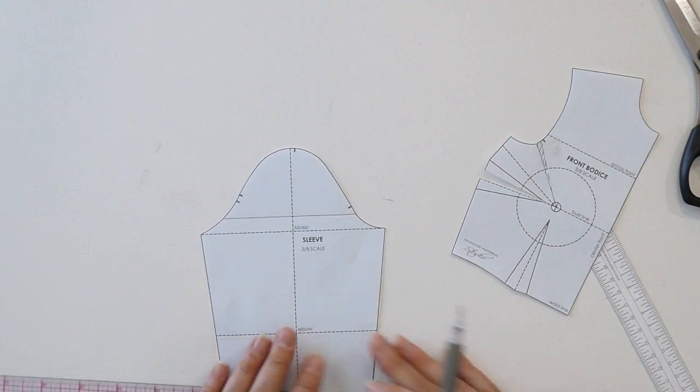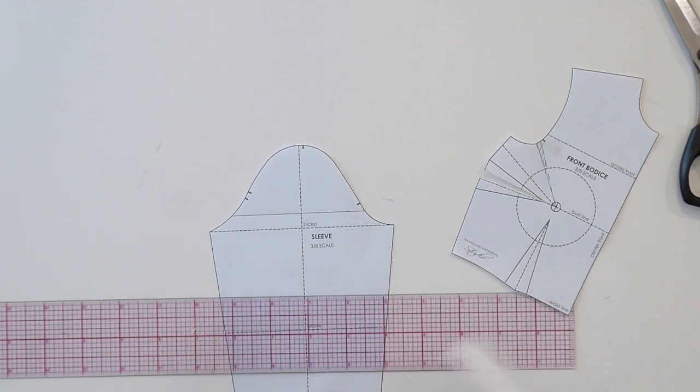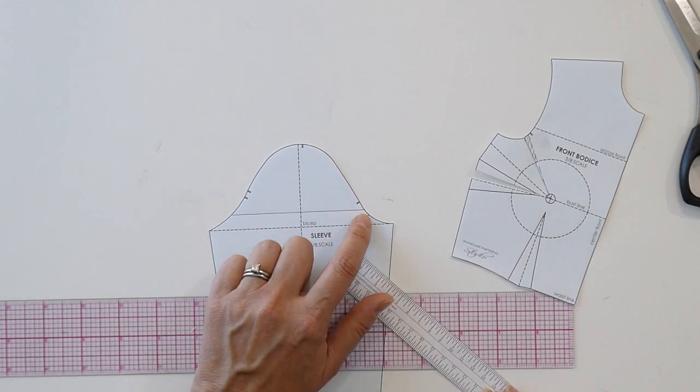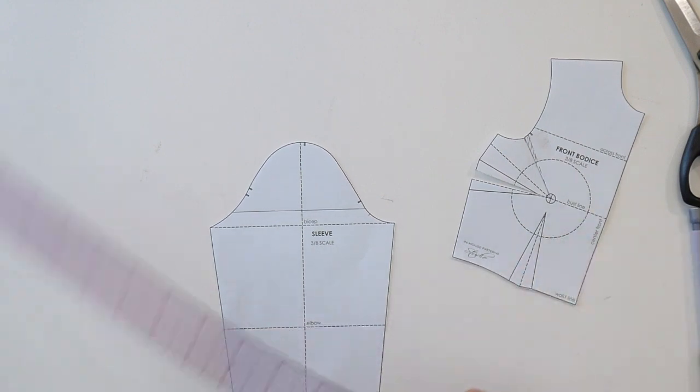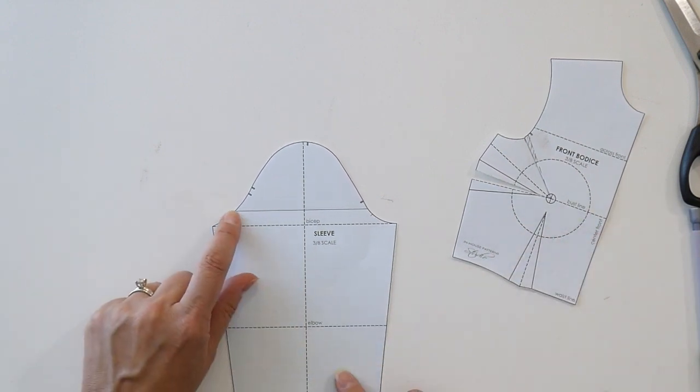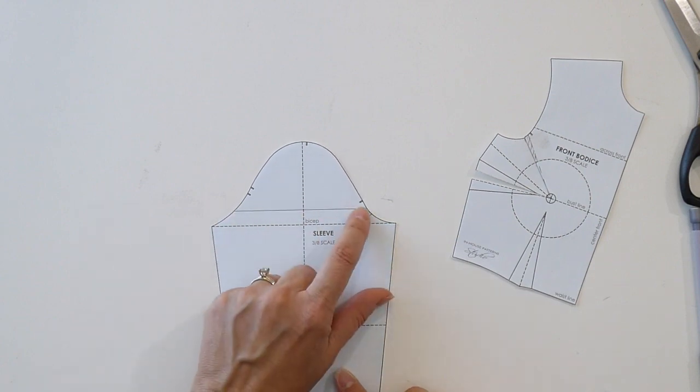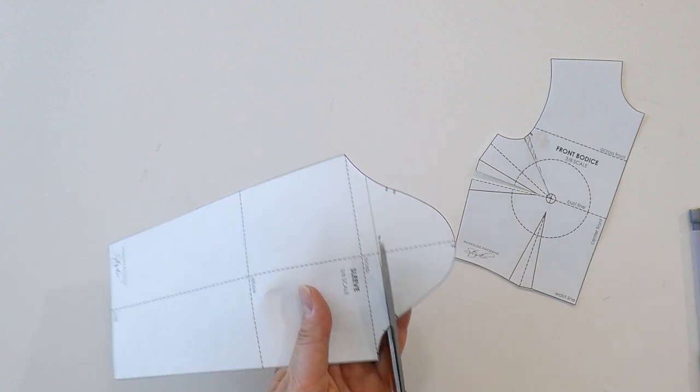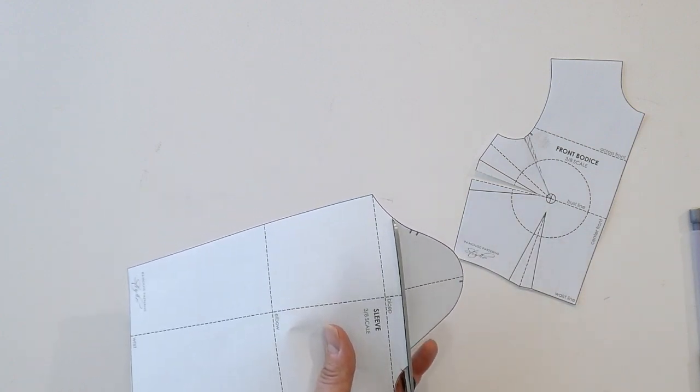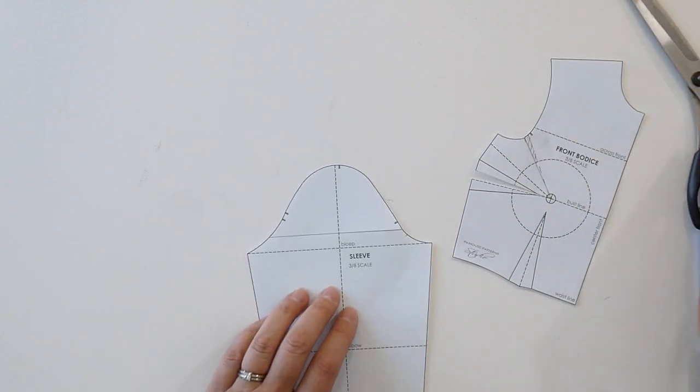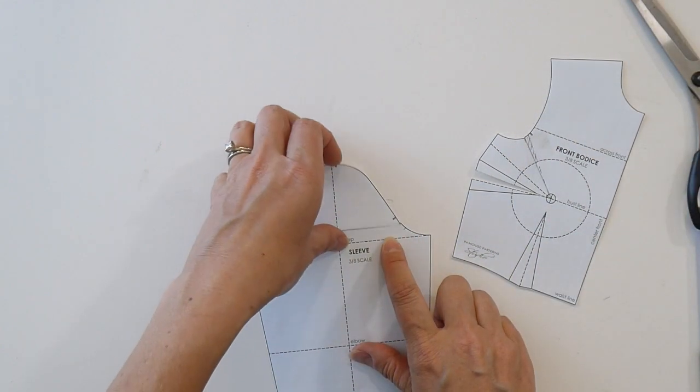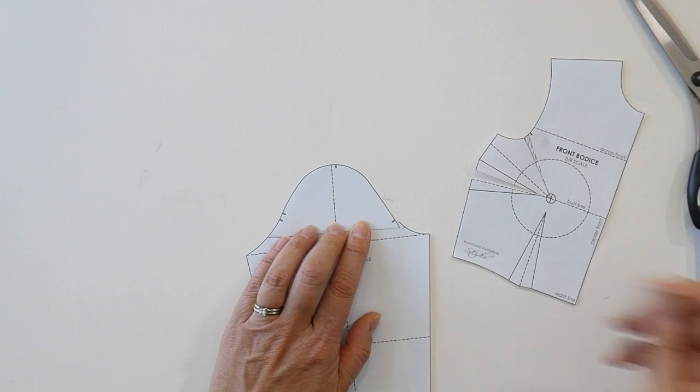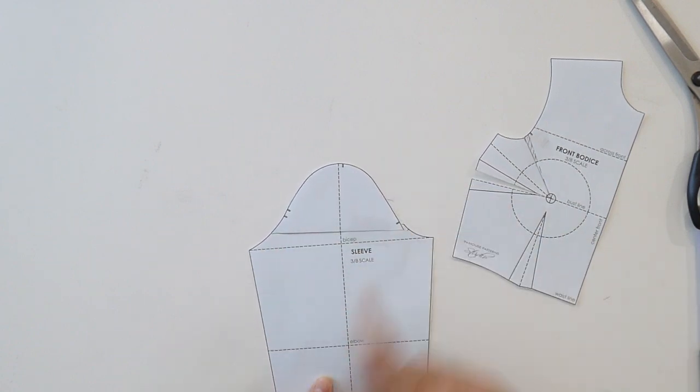I'm going to then close this front armhole area on the sleeve by the same amount. So I'm just going to mark half inch away there. I'm going to use the pivot point here at the back sleeve, and I'm going to close this section here. So if I just slash that through and leave a hinge there on the back side, and I close my pattern here to meet that half inch mark. So I'm just overlapping there by that half inch.